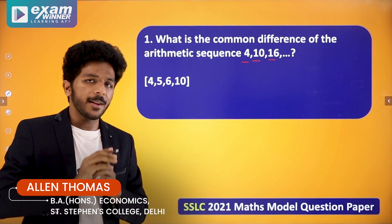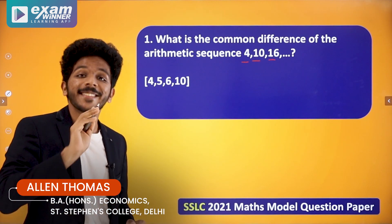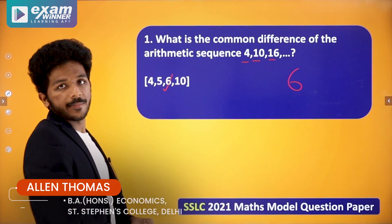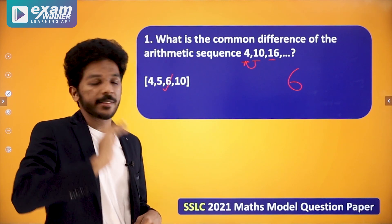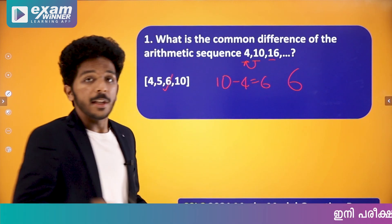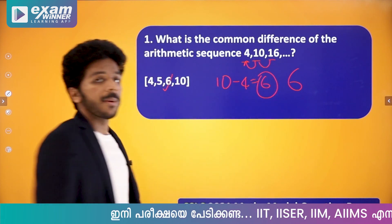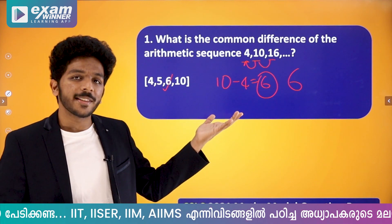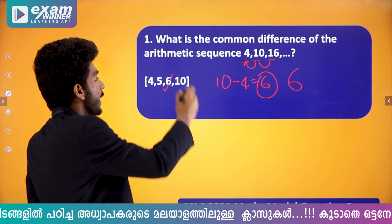This is a very simple question. The answer is 6. The common difference is found by subtracting the first term from the second term: 10 minus 4 is 6. Alternatively, 16 minus 10 is also 6. The third term minus the second term gives the same common difference of 6.